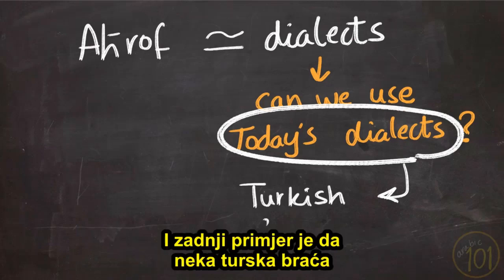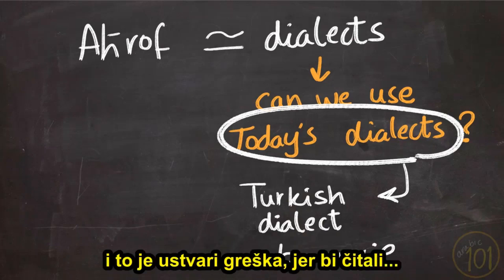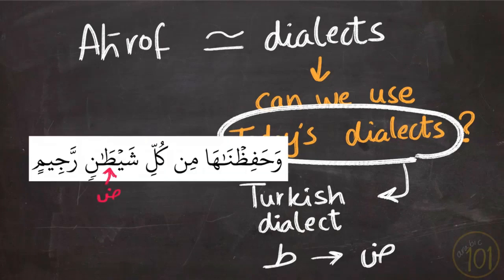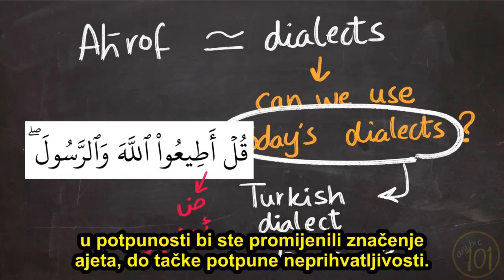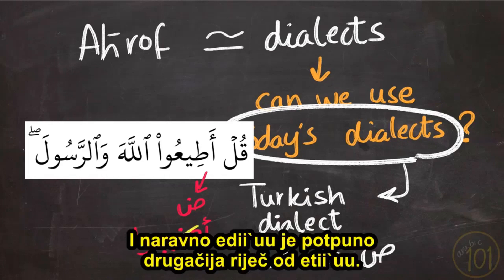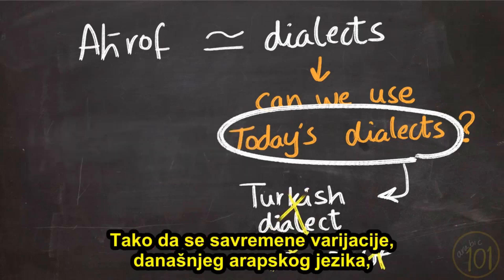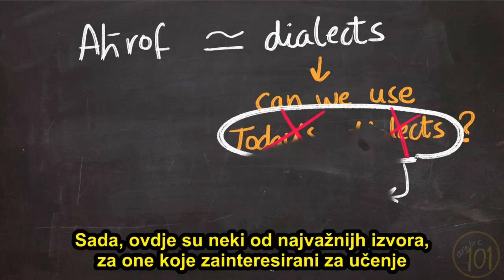Another example: some Turkish speakers exchange the letter ta' into dha', which is a mistake. For instance, they might read 'wa hafidna ha min kulli shaytanin rajeem' with dha'. But if you apply this rule to an ayah like 'ati'u,' you would read it as 'adhi'u,' which is a completely different word with an unacceptable change in meaning. So the contemporary variations of the Arabic language cannot be used to read the Holy Quran.